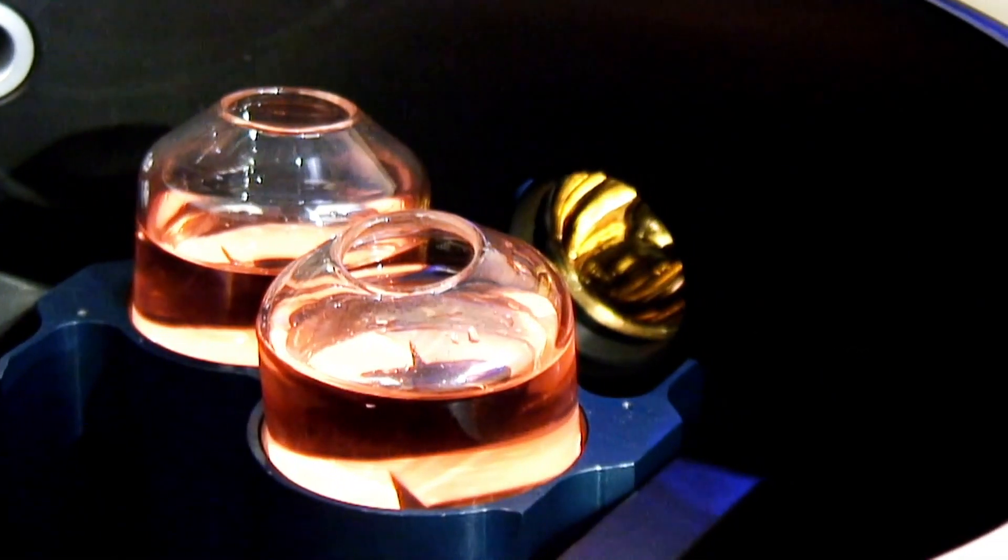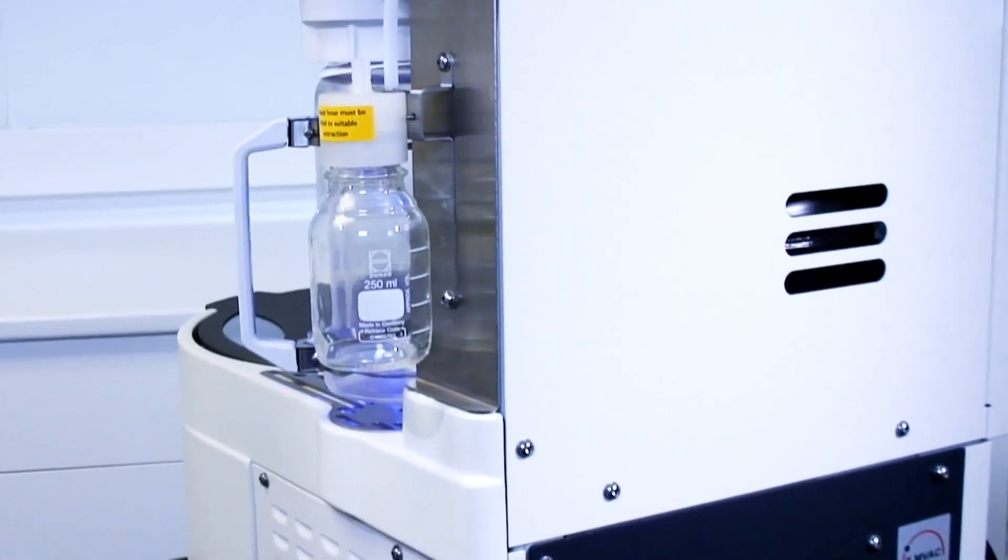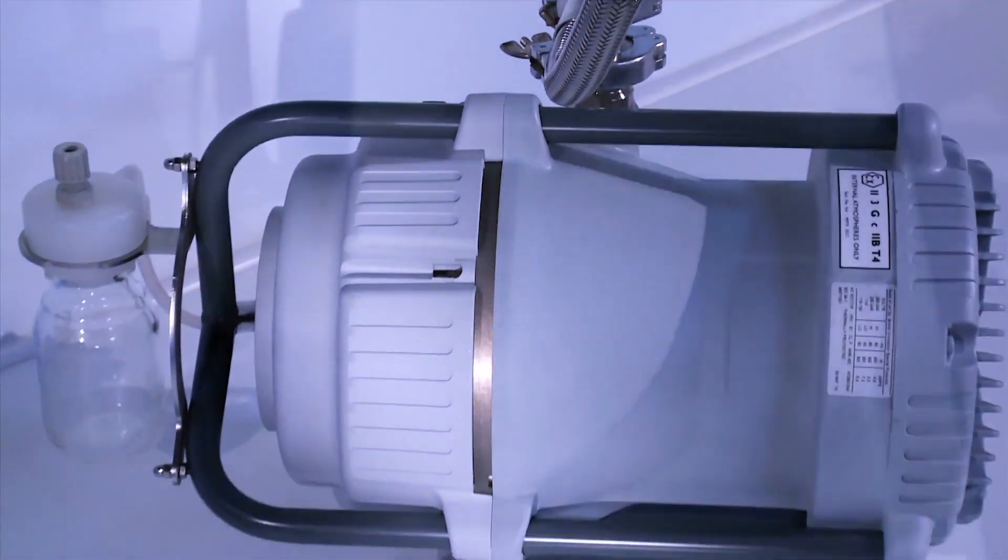The samples are spun in the centrifuge and as they boil, vapors are drawn to the cold trap which condenses them. A vacuum is created by a robust oil-free solvent resistant vacuum pump.